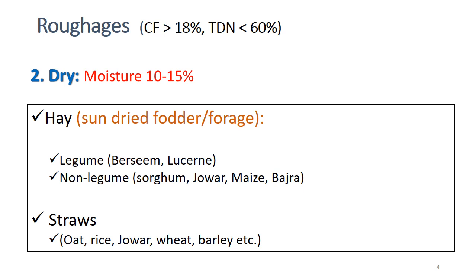Dry roughages contain moisture between 10 to 15 percent. The two main subclasses under this category are hay and straw. Hay is defined as sun-dried fodder — if you dry fodder under sunlight, that is known as hay. Depending on the type of fodder used, it is called legume hay or non-legume hay. Using berseem and lucerne produces legume hay; using sorghum, maize, bajra, or grasses produces non-legume hay. In the southern part of the country, Rhodes grass is commonly used for hay making.